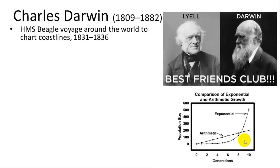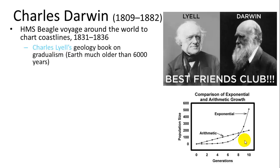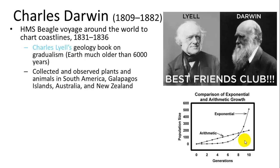Charles Darwin's formulation of his hypothesis was influenced by several things. He served as a naturalist aboard the HMS Beagle, which traveled around the world, and he made extensive observations. He also read Charles Lyell's geology book, which established the principle of gradualism — that the Earth is much older than 6,000 years, providing the vast time needed for evolution to take place.